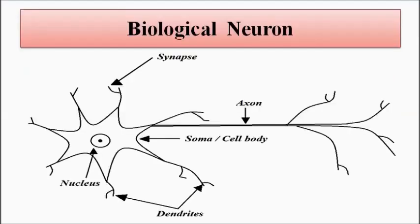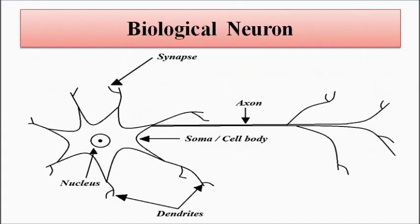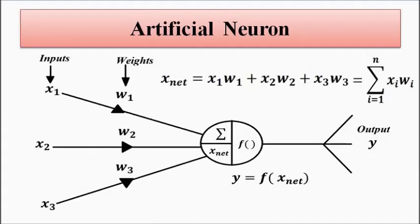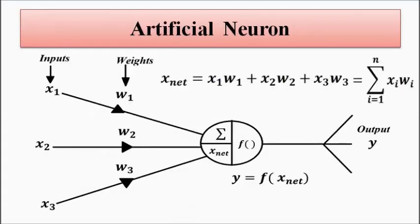As we already know, the biological neuron inspires the design of the artificial neuron. We have already studied about the biological and artificial neuron and which parts of the biological neuron are analogous to the artificial neuron. You can please check out that video about biological and artificial neuron. Now let us draw a comparison between biological neuron and artificial neuron on the basis of various criteria.